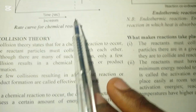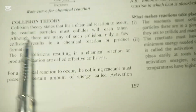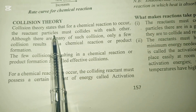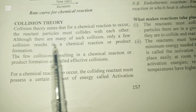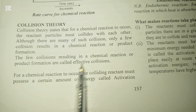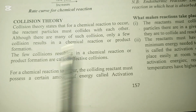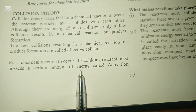Under this we have the collision theory. Collision theory states that for a chemical reaction to occur, the reactant particles must collide with each other. Although there are many such collisions, only a few — called effective collisions — result in product formation. Some collisions occur that do not lead to the reactant turning into product.